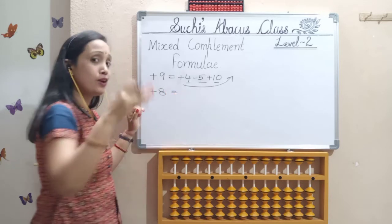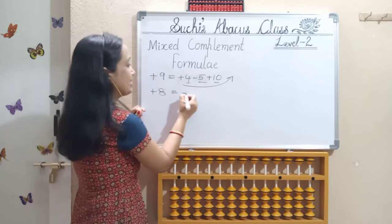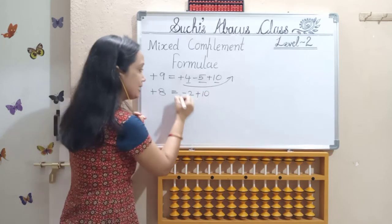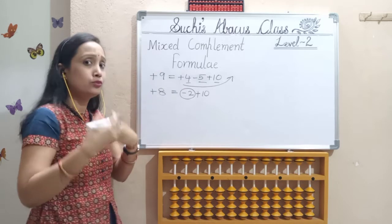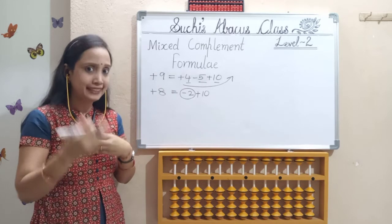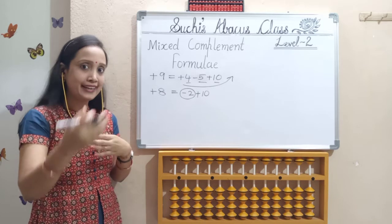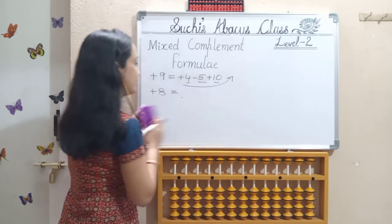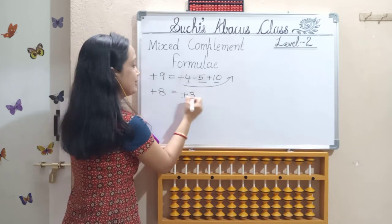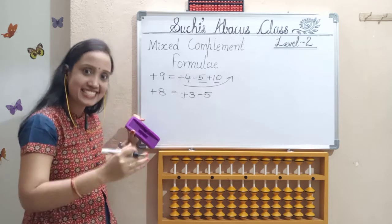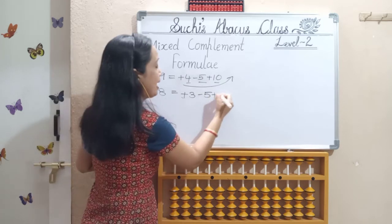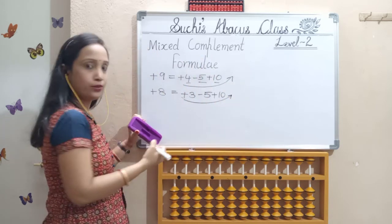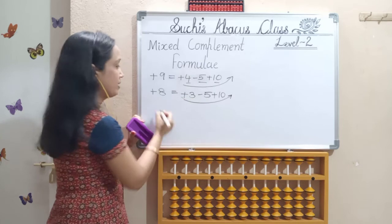Add 8. The first formula for add 8 is less 2, add 10. We will replace this less 2 with add 3, less 5 — because 3 and 5 gives us that combination, and from 5 we can derive the 2. So the new formula: add 3, less 5, add 10. This one is also in ascending order — 3, 5, 10.